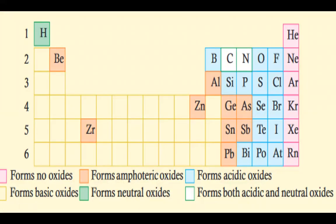There are a few exceptions. We have discussed that metallic elements form basic oxides while nonmetallic elements form acidic oxides. However, beryllium, zirconium, zinc, aluminium, germanium, tin, lead, arsenic, and antimony form amphoteric oxides.